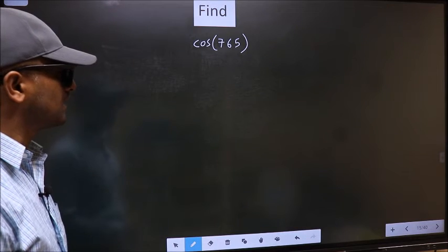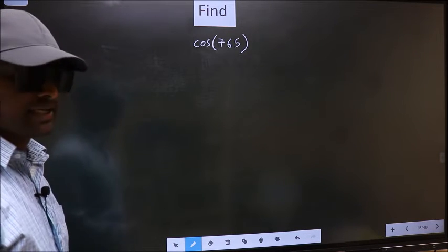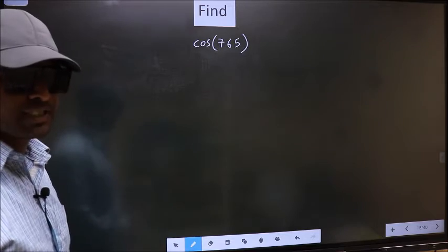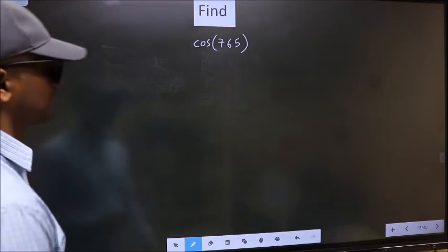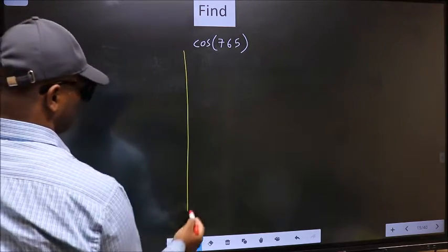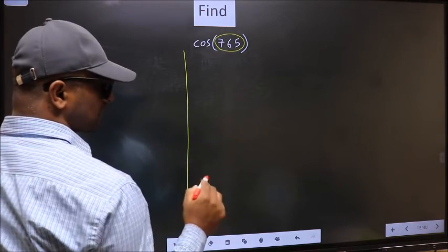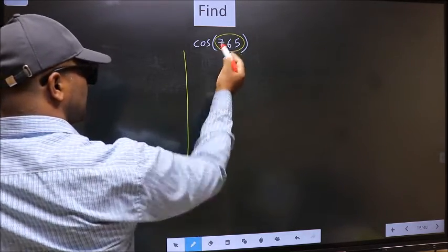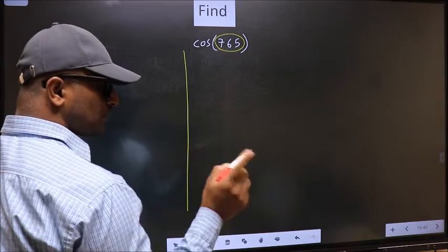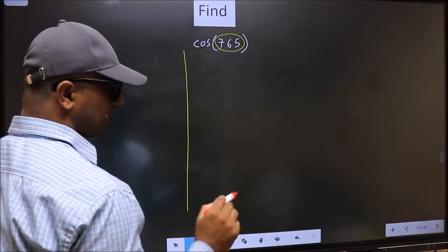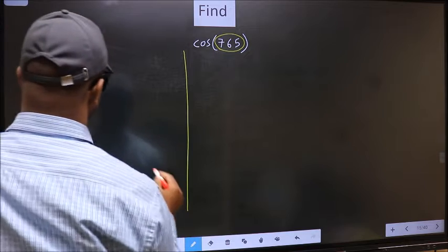Find cos 765. To find this, we should follow this method. Here we have 765. Now you should check: 765 lies between which two multiples of 180?